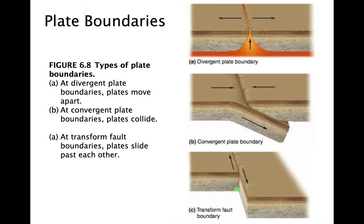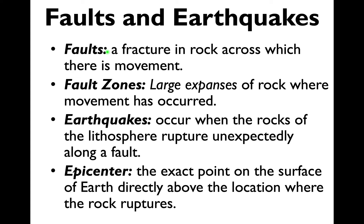Now let's talk about faults and earthquakes. Going back to the transform fault: as plates shift against each other, there's shearing of rock. A fault is a fracture in rock across which there is movement. Fault zones are large expanses of rock where movement has occurred — long swaths of land, miles and miles long. We have these really long fault zones.